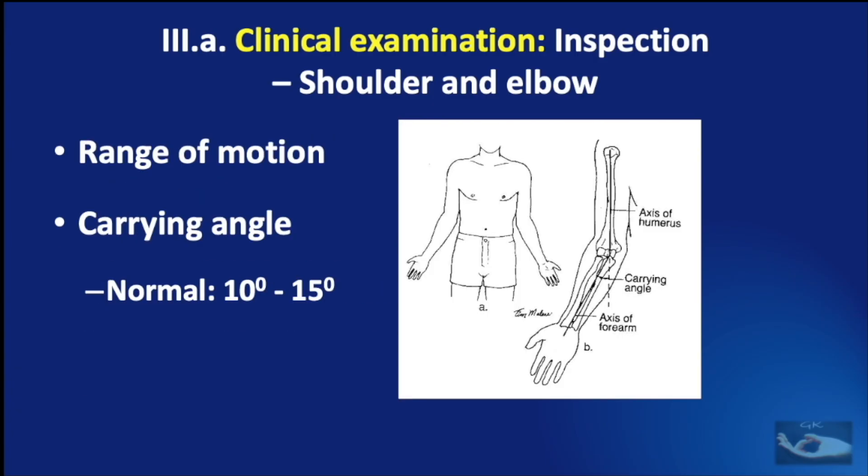When inspecting the elbow, apart from the range of motion, we need to measure the carrying angle — the angle between the axis of the arm and the axis of the forearm. This is normally about 10 to 15 degrees, but is increased in conditions such as malunion of supracondylar fracture of the humerus, which can lead to stretching of the ulnar nerve.